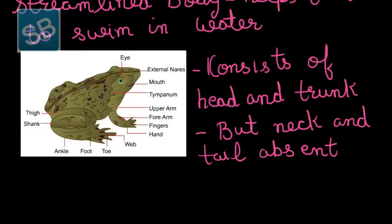The trunk bears two pairs of limbs — forelimbs and hind limbs. Forelimbs present in the front are short and consist of four fingers. On the contrary, hind limbs which are present at the back are long and consist of five toes. Toes of hind limbs are connected by webs which help the animal in swimming. The ankle, foot, and toes comprise the hind limbs, and the forearm, hand, and fingers comprise the forelimbs.